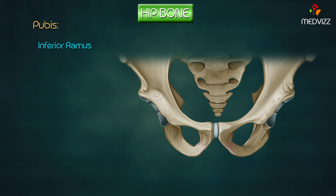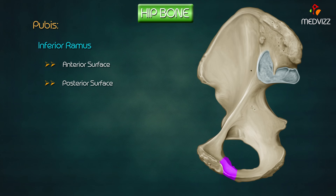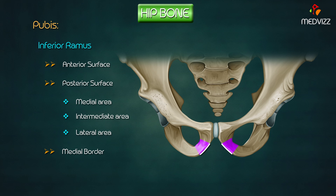The inferior ramus is the part of the pubic bone which extends backwards from the body and unites with the ramus of the ischium on the medial side of the obturator foramen. It has two surfaces and two borders. The anterior surface is continuous with the anterior surface of the body and is directed downwards, forwards, and laterally. The posterior surface is continuous with the posterior surface of the body above and with the posterior surface of the ramus of the ischium below, divided into three areas by two blunt ridges: medial, intermediate, and lateral. The medial border is more prominent in males, and the lateral border forms the medial boundary of the obturator foramen, giving attachment to the obturator membrane.